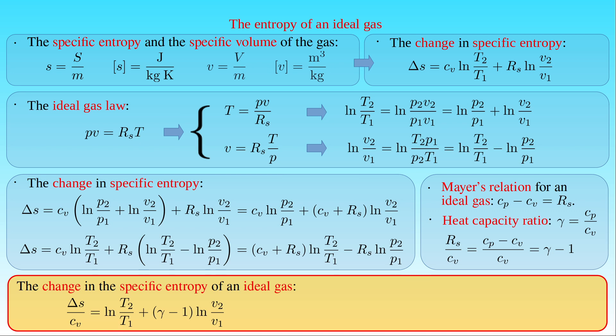If the transformation consists of an isochoric process and an isobaric process, then ΔS over C_V can be written as the natural logarithm of the ratio of the final pressure P2 to its initial pressure P1, plus gamma times the natural logarithm of the ratio of specific volume V2 to V1.